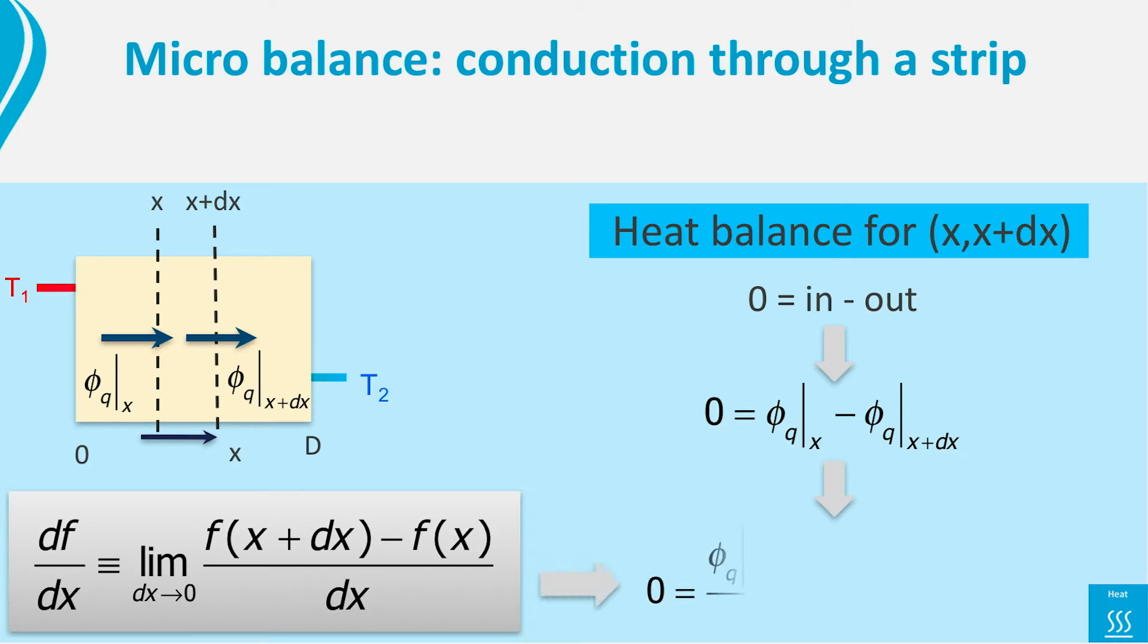We can write our balance in this form by dividing left and right by dx. We see that the derivative of the heat flow is 0, thus the heat flow itself must be a constant. That is no surprise. The heat balance told us that in a steady state, without production, the heat flowing in equals the heat flowing out. Thus, the same heat flow runs everywhere.